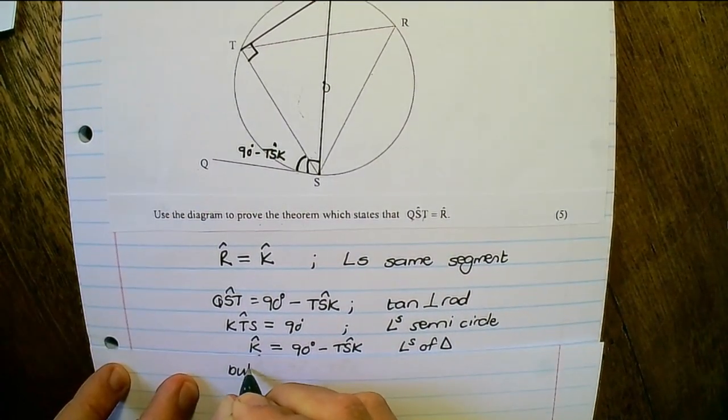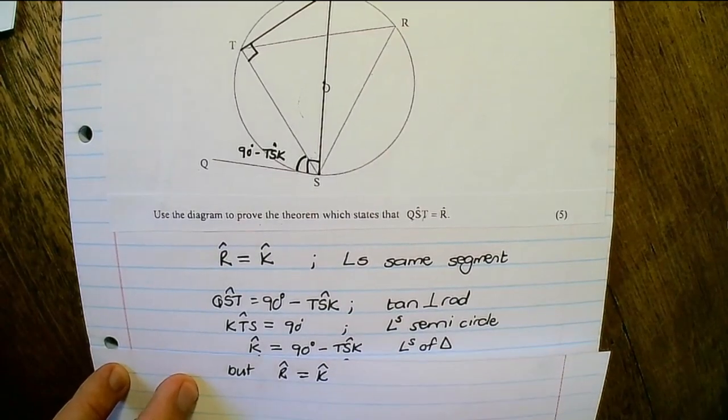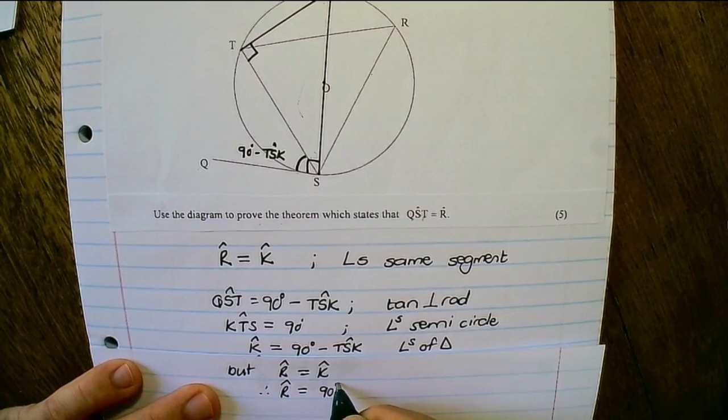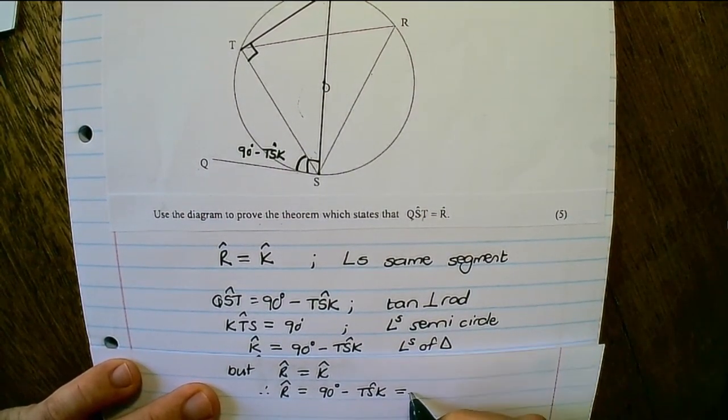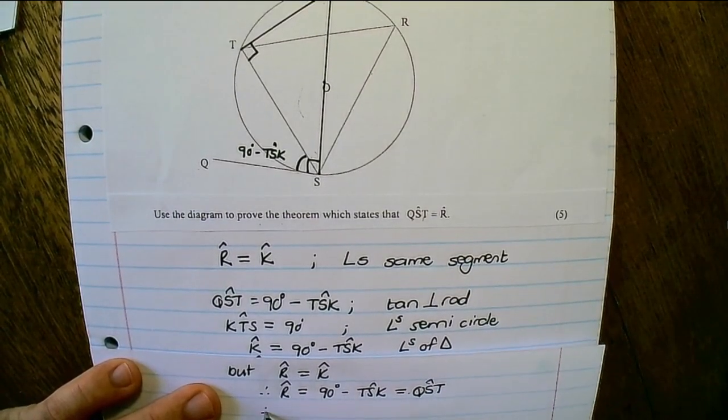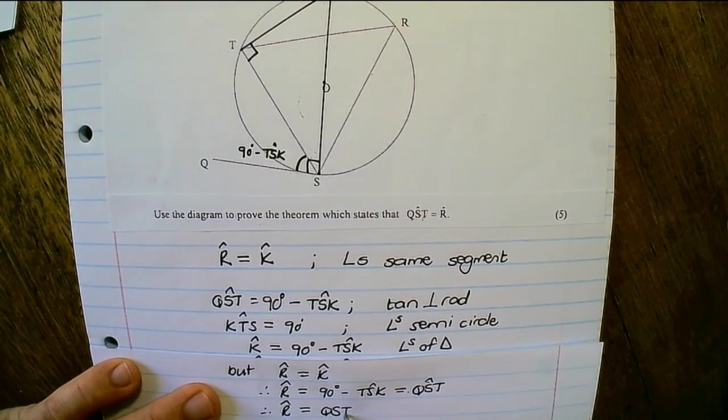But we have already proven that angle R is equal to angle K. Therefore, angle R is also equals to 90 degrees minus TSK and this is equals to angle QST. So therefore angle R is equals to angle QST.